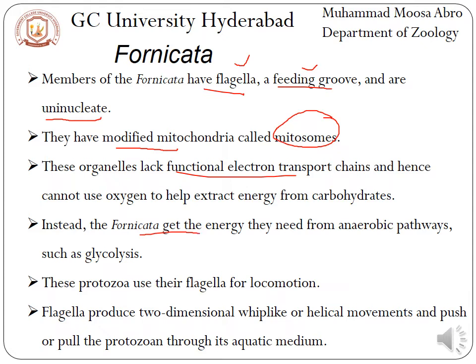Therefore, all Fornicata use anaerobic pathways such as glycolysis for metabolism and energy production. These protozoa use their flagella for locomotion, and the flagella produce two-dimensional whip-like or helical movement to push or pull the body through the aquatic medium.